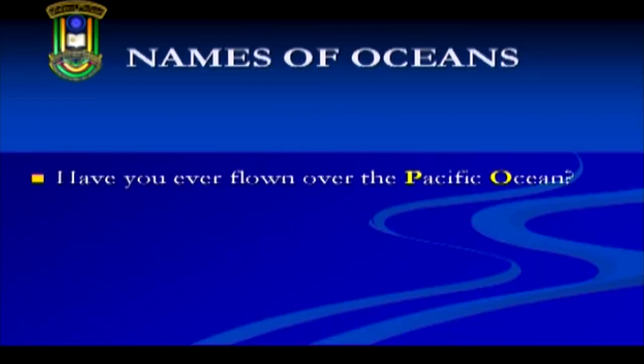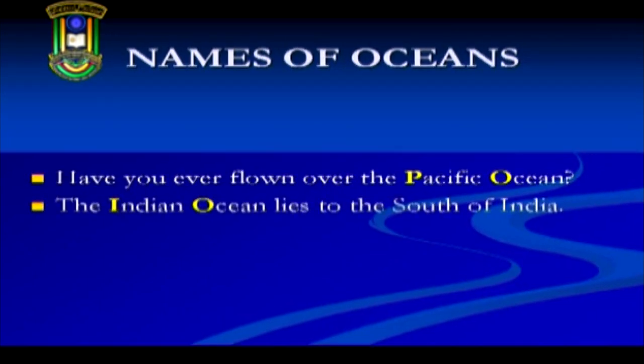Now let us look at how capital letters are used to indicate names of oceans. Have you ever flown over the Pacific Ocean? You would capitalize P and O. Or: the Indian Ocean lies to the south of India. In both cases, you will be using capital letters to indicate the names of oceans. There are only four oceans — Pacific Ocean, Indian Ocean, Arctic Ocean and Antarctic Ocean — and all will need to be capitalized.